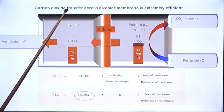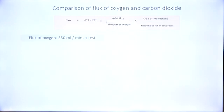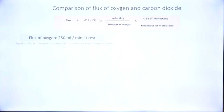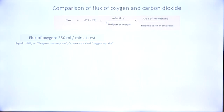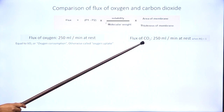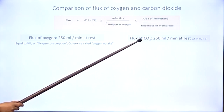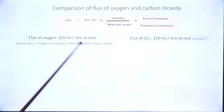Why do we say that carbon dioxide transfer across the alveolar membrane is extremely efficient? Let us compare these values with those for oxygen. VO2, or flux of oxygen, is 250 ml per minute in resting conditions in a reference adult male. When it comes to flux of carbon dioxide, whatever carbon dioxide is formed in the tissues is what is transferred from the capillary to the alveolus in the lungs.